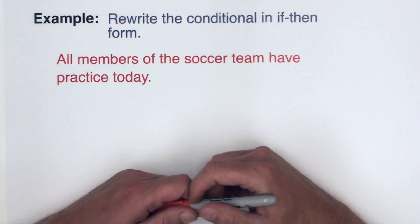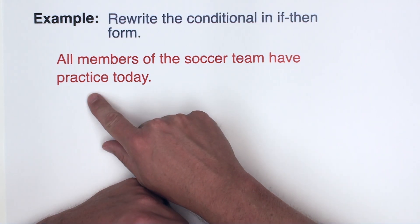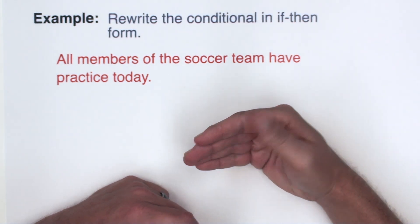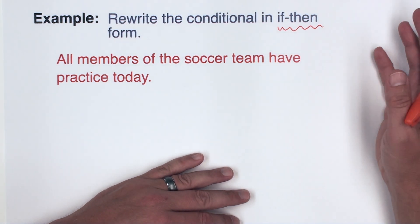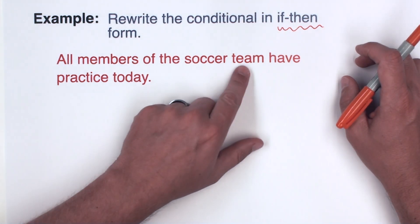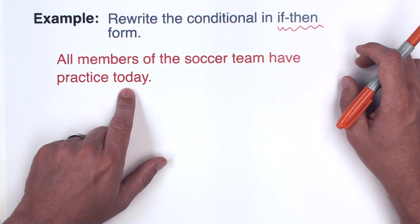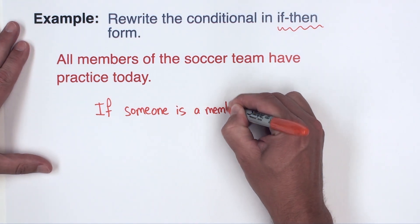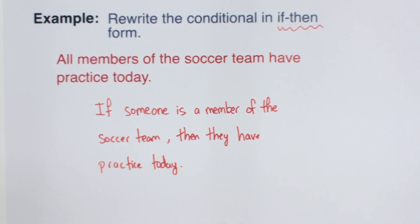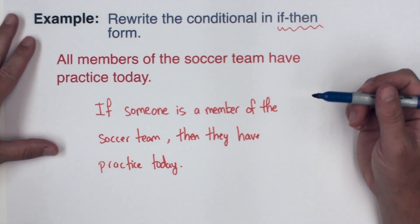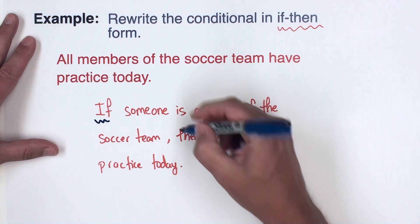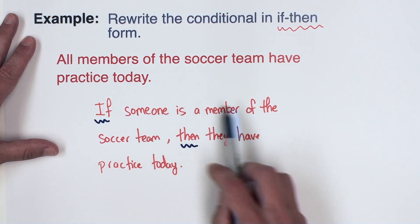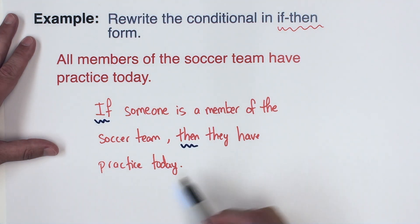This first example asks us to rewrite a conditional in if-then form. The statement is: all members of the soccer team have practice today. Since it's not written in if-then form, we want to rewrite it. So we'd say: if someone is a member of the soccer team, then they have practice today. The same information is there — we've just split it into a hypothesis and a conclusion.